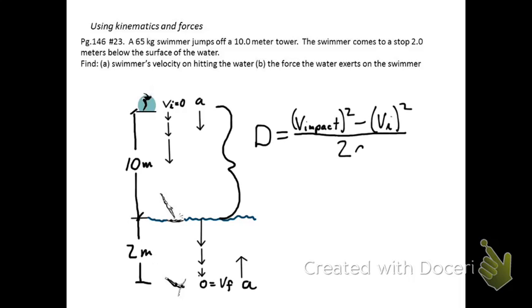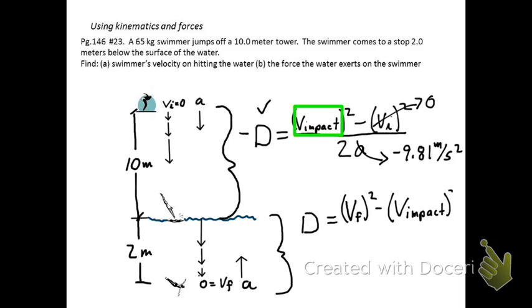Now using equation number five here, I can plug in my knowns, and I can calculate my velocity at impact. Make sure you put the negative sign on your displacement. Now this velocity at impact, then I'm going to use for the next part of the kinematics, and that is where I'm going to plug it in here to calculate the acceleration that it's going to take to slow from the impact velocity to zero over a distance of two meters.